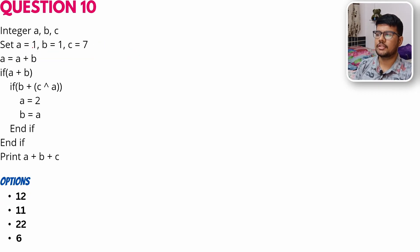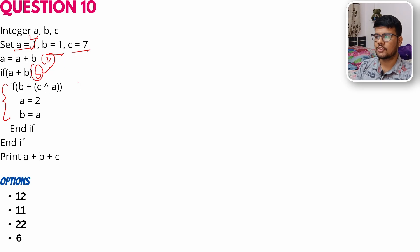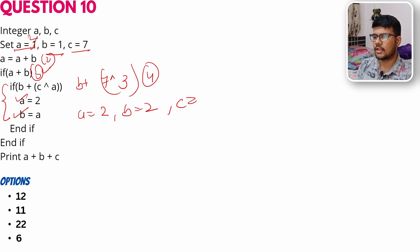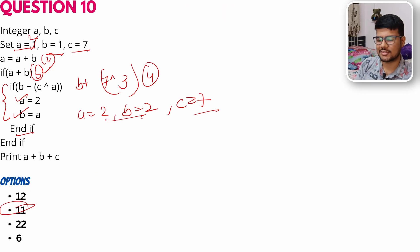Question 10: a = 1, b = 1, c = 7. First, a becomes 2. Then a + b = 2 + 1 = 3, so the condition executes. Inside: c XOR a = 7 XOR 3 = 4, then b = b + c XOR a. After the block: a = 2, b = 2, c = 7. Final result: a + c = 4 + 7 = 11. The correct answer is 11.